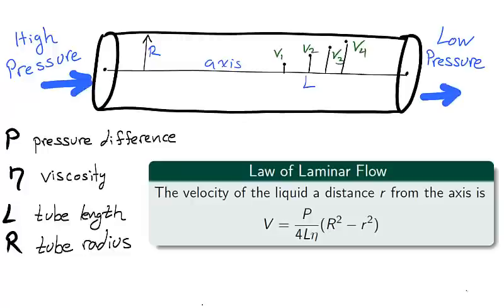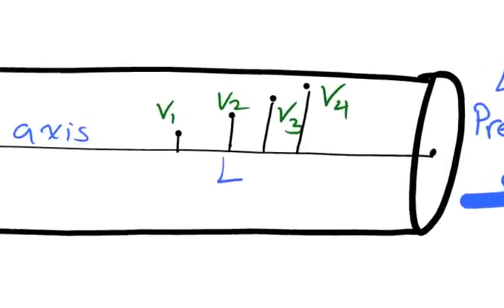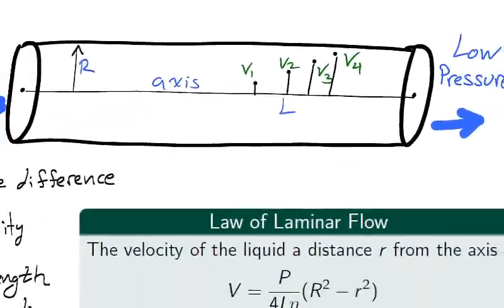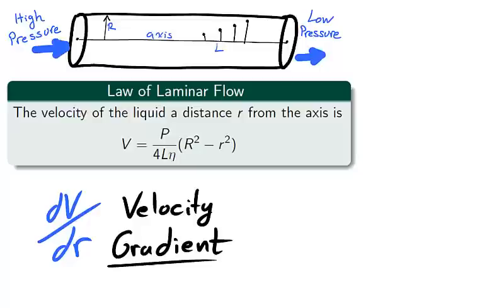Question. How fast is the velocity of the liquid decreasing as we move from the axis to the wall? That is, what is the trend in velocity from v1 to v2 to v3 to v4? What we are looking for is the change in velocity, v, with respect to the change in radius from the axis, little r. dv over dr is called the velocity gradient.